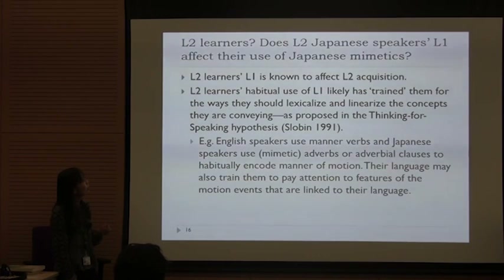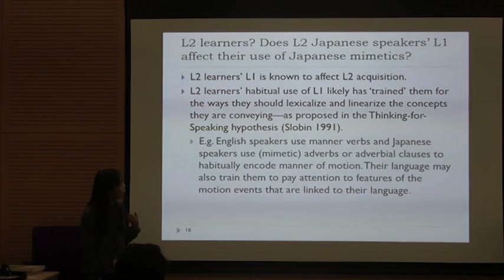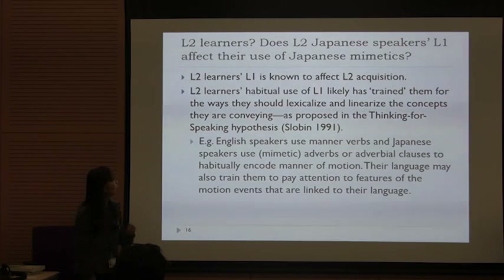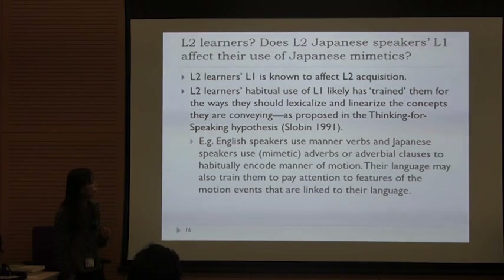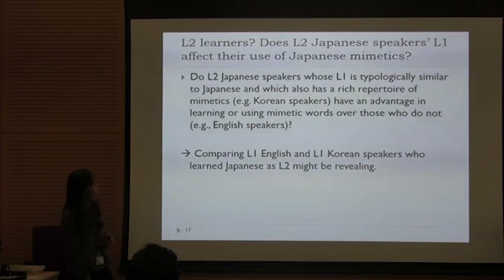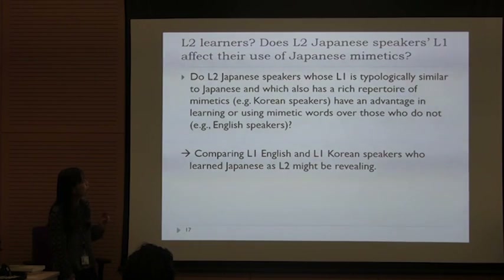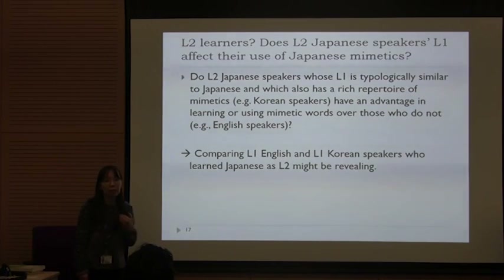One interesting question is that some languages have a lot of mimetics, such as Korean and some African languages, while languages like English do not have many mimetic-like words. Does that affect their use of Japanese mimetics as a second language? One study I conducted examined whether L2 Japanese speakers whose L1 is typologically similar — Korean — have an advantage in using Japanese mimetic words.